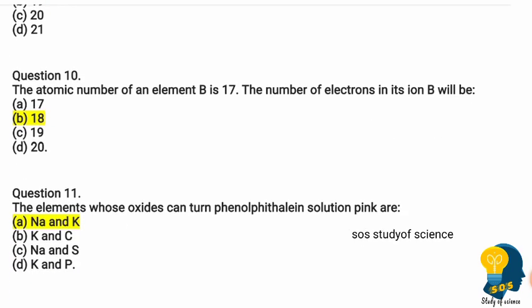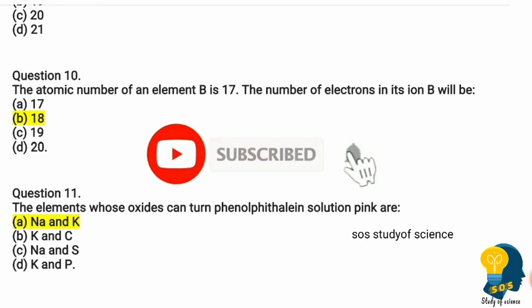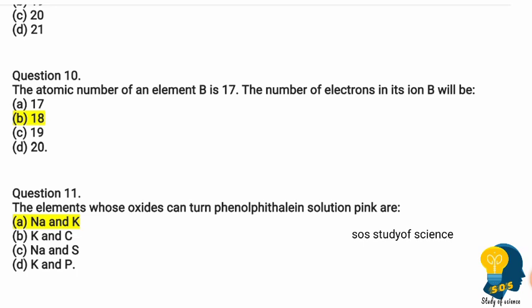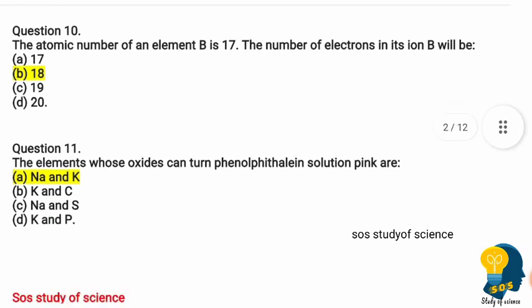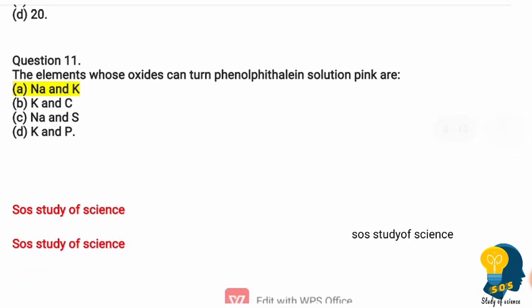Question ten: the atomic number of element B is 17. The number of electrons in its ion B− will be — since the shell is completed, one electron is added, so 17 becomes 18. Question eleven: the elements whose oxides can turn phenolphthalein solution pink are sodium and potassium, because they are highly reactive.